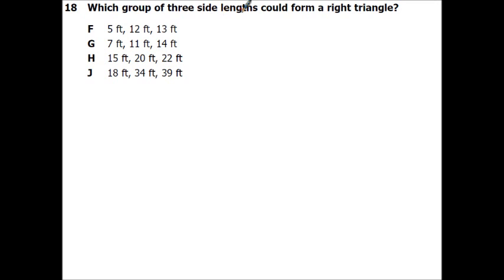Alright, which group of three lengths could form a right triangle? So remember, we can use our Pythagorean theorem, which is A squared plus B squared equals C squared. Your C is your hypotenuse, which is your biggest. So we'll just go ahead and start. So five squared plus 12 squared equals 13 squared. So that's 25 plus 144 equals 169.